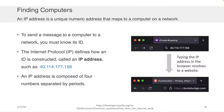That's what the Internet Protocol does — it defines how these IDs for our machines are constructed, which are called IP addresses. An IP address, at least in version 4, is composed of four numbers separated by periods. For example, 40.114.177.156 is an example of an IP address.